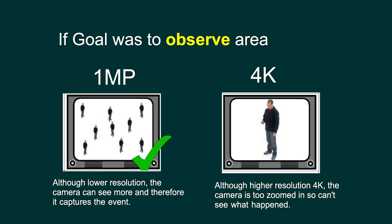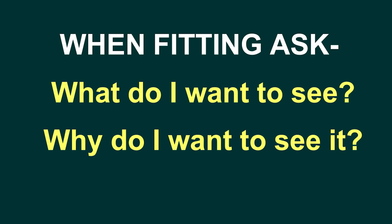If you flip that — if the goal was to observe a wider area, like monitoring traffic or your front driveway — and you had a 4K camera with a variable lens zoomed in too much, you might miss what happened outside. If there was a robbery at a neighboring property, the wrong lens angle means you've missed it. Therefore it's very important to always ask these two principle questions: what do I want to see and why do I want to see it?